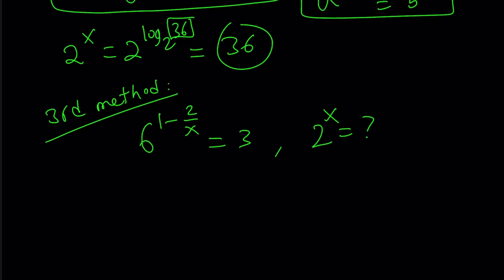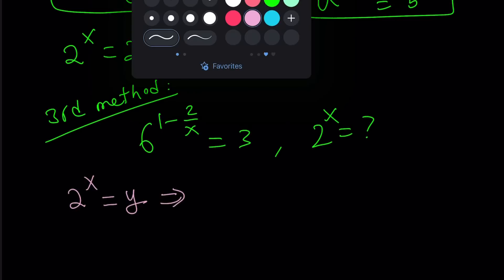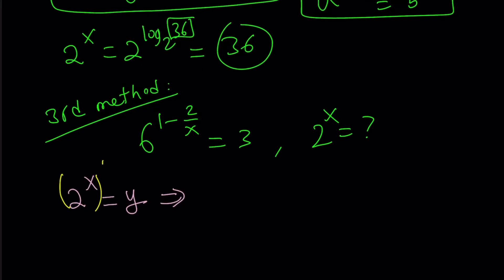So for my third method I'm going to set the 2 to the power x equal to something. So basically I'm going to use substitution. Let's set 2 to the power x equal to y. So from here we can raise both sides to the power 1 over x. And then this becomes 2 equals y to the power 1 over x. Now why do I need that? I'm going to replace 2 with that in my expression.